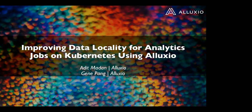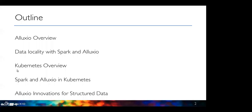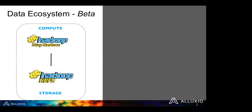Hi everyone, this is Adit. I'm going to co-present the talk with my co-worker and friend Jean. Thanks everyone for joining. So in the talk today, I'll begin with a quick introduction of Alluxio, then move on to describing how you achieve data locality with Spark and Alluxio without Kubernetes, followed by a quick recap of Kubernetes basics. Then I'll cover how we achieve locality with Spark on Alluxio in Kubernetes — the challenges and solutions — and towards the end, Jean will talk about recent innovations for structured data with Alluxio.